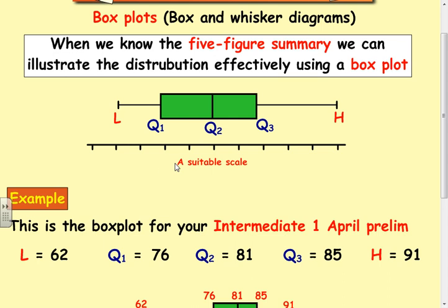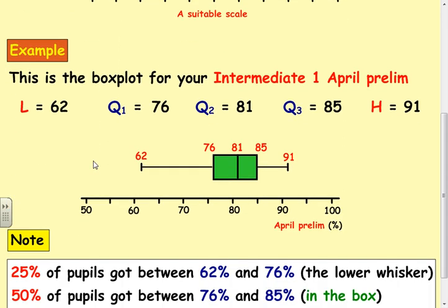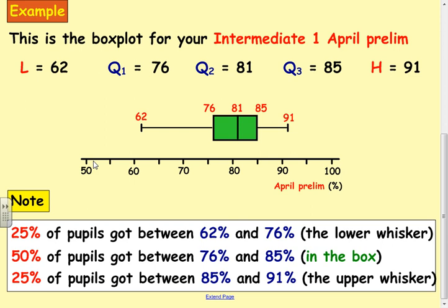Remember, if you're doing it, suitable scales need to be put in at the bottom. So, here's an example here for a test that was done. The lowest number is 62. Q1, Q2, and Q3 are the numbers here, and the highest value is 91. So, my scales went up in fives. I started at 50, a bit lower than the 62, up to 100%.